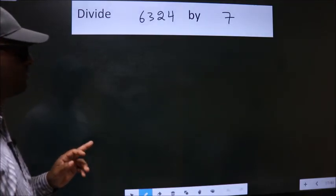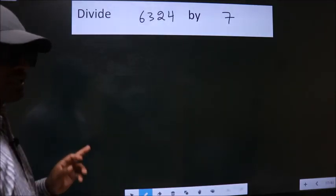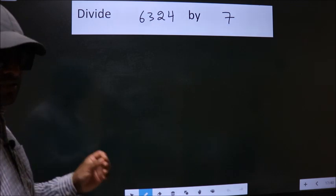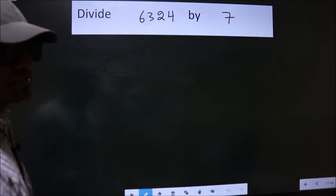Divide 6,324 by 7. To do this division, we should frame it in this way.